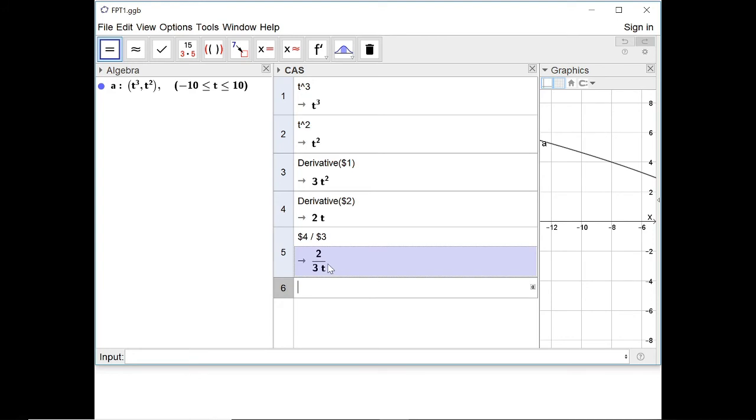And that gives me dy by dx is two over three t. So this gives me some insight into why strange things are happening when t equals zero. Now to prove that it is in fact a cusp I need to prove that as I approach t equals zero from above and as I approach t equals zero from below I get the same gradient.